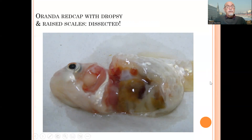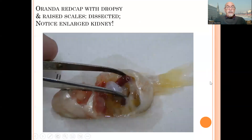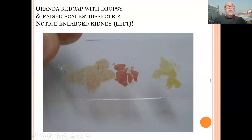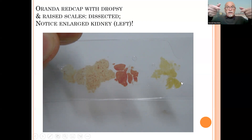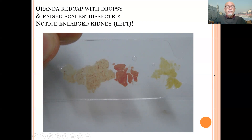We can see the enlarged kidneys here, which you can examine with a microscope. We took some of the organs on a plate and squeezed them between two glass plates. On the right is the liver, in the middle is the spleen, and on the left are the enlarged kidneys. Under the microscope, we can see tubercles in the kidneys.